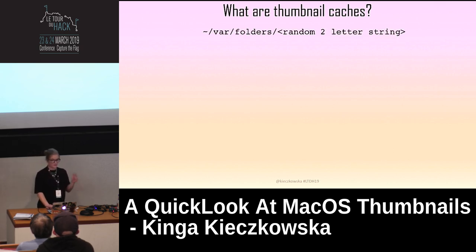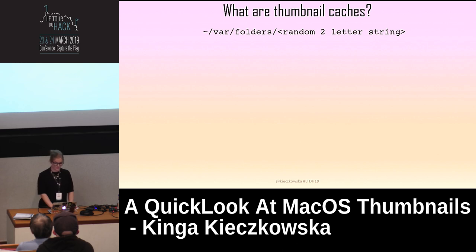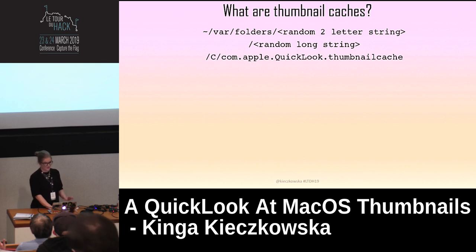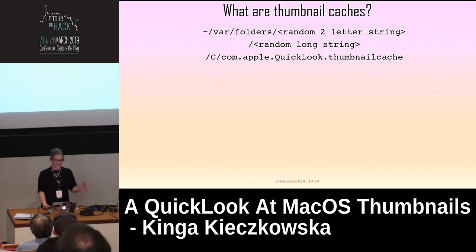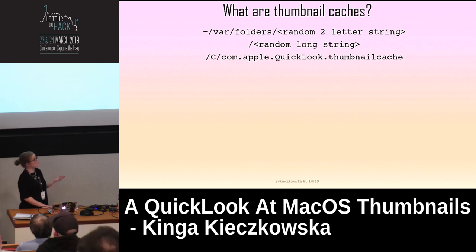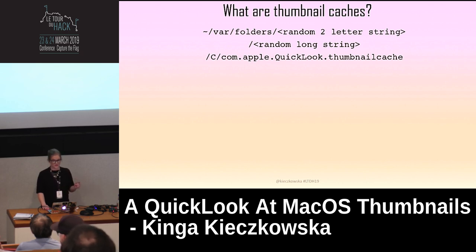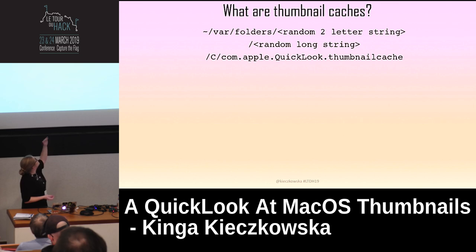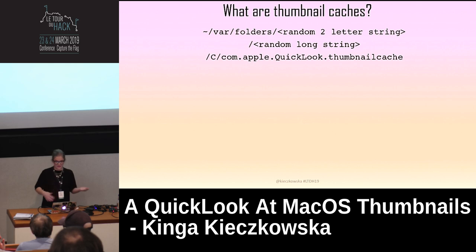Where is this cache? You go to var/folders, then there will be a random two-letter string directory name, then a random long string, then a C directory, and then com.apple.quicklook.thumbnailcache. The best way to find it is to go to var/folders and use the find command with the name 'thumbnail cache' from there, because there will be a lot of different random directories.